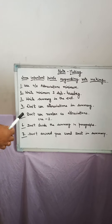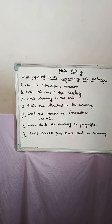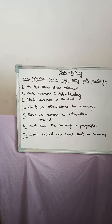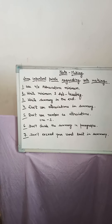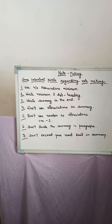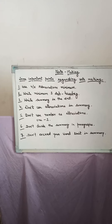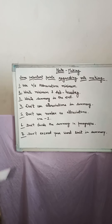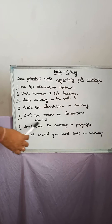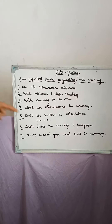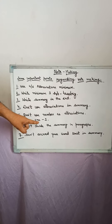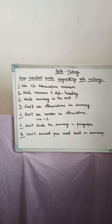Fifth point: don't use numbers as abbreviations. Numbers are not considered as abbreviations. This is the example — so this is not considered as an abbreviation.